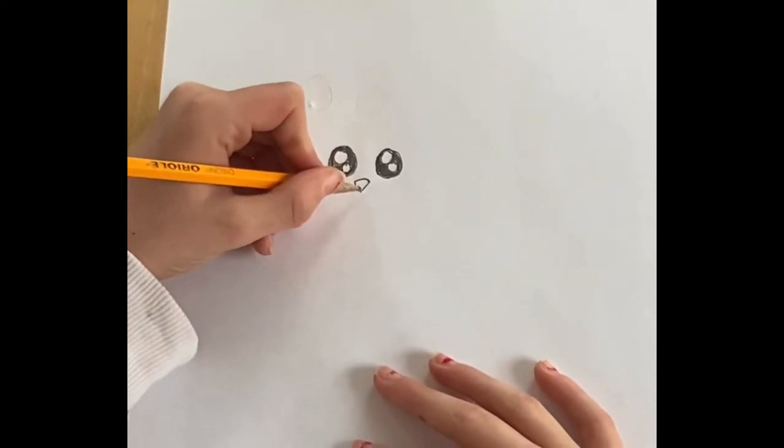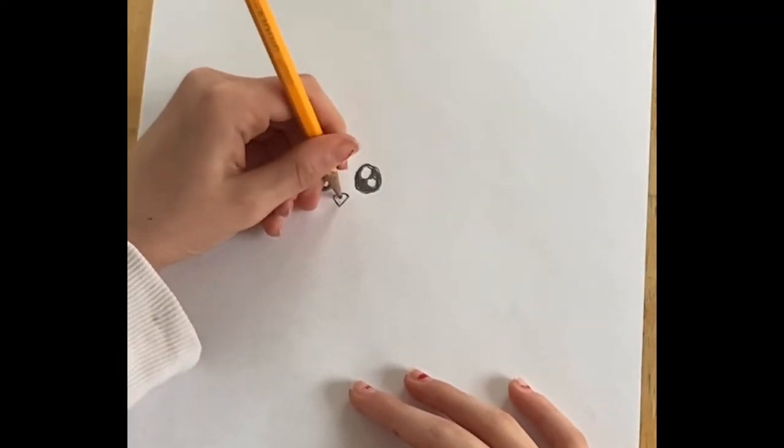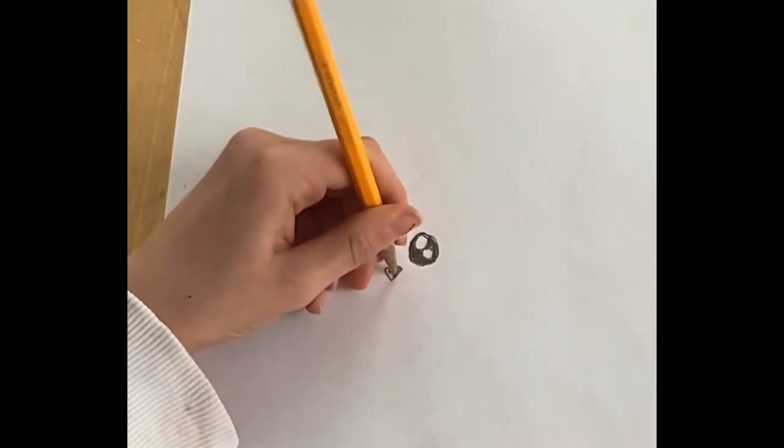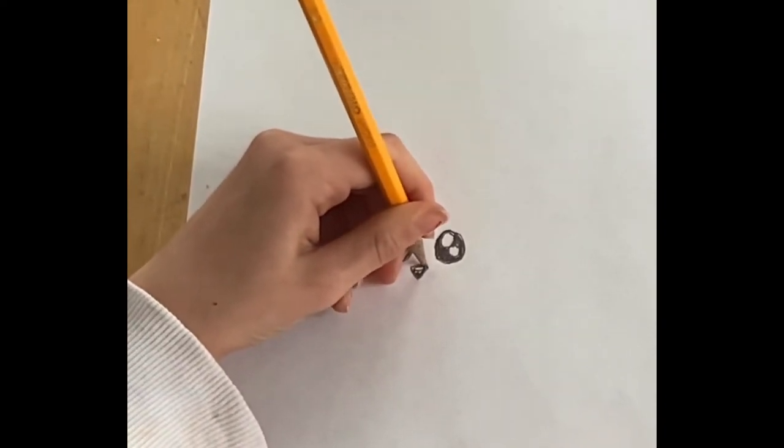And then we just draw a little circle in the middle here. We'll show a little bit of some white right there.